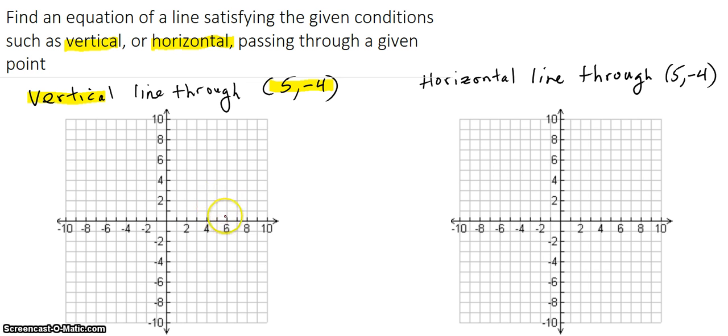So let's identify where (5, -4) is—it's right here. We have to pass a vertical line through that. So it's going to be some kind of line like this, vertical.